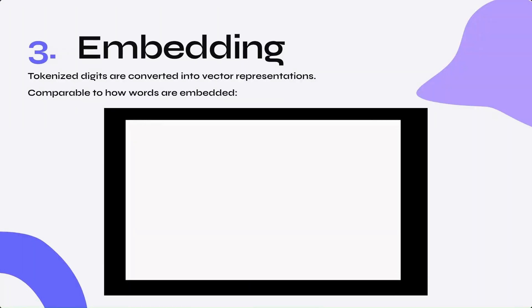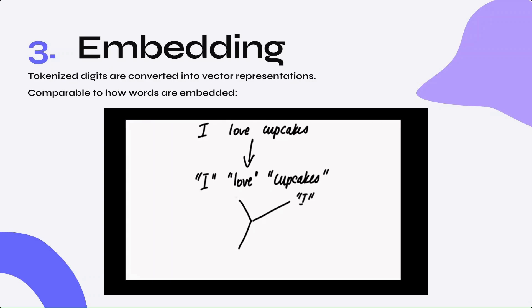The third step is embedding. Tokenized digits are converted into vector representations, similar to how words are embedded for traditional natural language processing tasks. For example, take the sentence 'I love cupcakes.' A tokenized version would be those three words. In this simple example, the tokenized words are converted into a three-dimensional vector representation, with each vector being assigned ones and zeros based on a prompt. If the word 'love' was included in a prompt, 'I' and 'cupcakes' would be assigned zero and 'love' would be assigned one. LLMs typically have much higher dimensional vector representations.